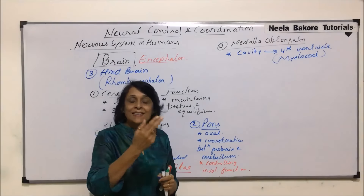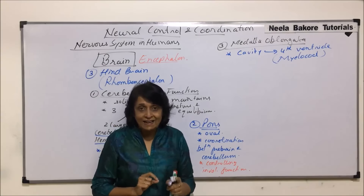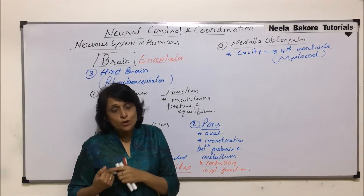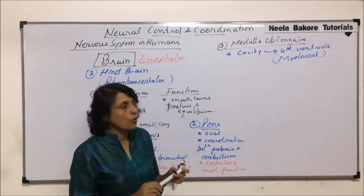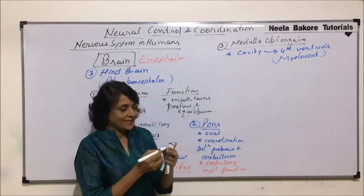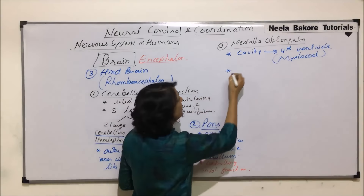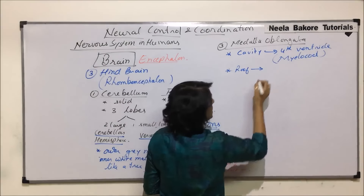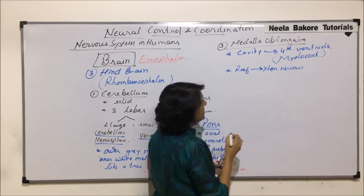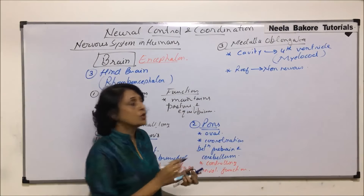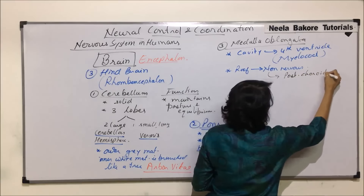Mylocele is connected anteriorly to the third ventricle by the aqueduct of Sylvius, and posteriorly it continues with the cavity in the spinal cord. Its roof is non-nervous, and this non-nervous roof forms the posterior choroid plexus.